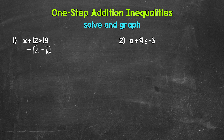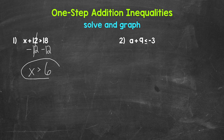On the left side, these 12s cancel each other out, so x is now isolated. We have x is greater than, and then on the right side, 18 minus 12 gives us 6. So x is greater than 6. That's our answer. Any value greater than 6 is a solution of this inequality — it will make it true.